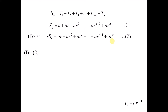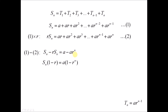Taking equation 1 minus equation 2, meaning Sn minus r·Sn, the middle terms cancel out — ar minus ar is 0, ar squared minus ar squared is 0, and so on. We are left with a on one side and ar to the power of n on the other. So we have Sn minus r·Sn equals a minus ar to the power of n. Factorizing Sn and a, then moving 1 minus r to the right-hand side, we get the first formula for Sn.